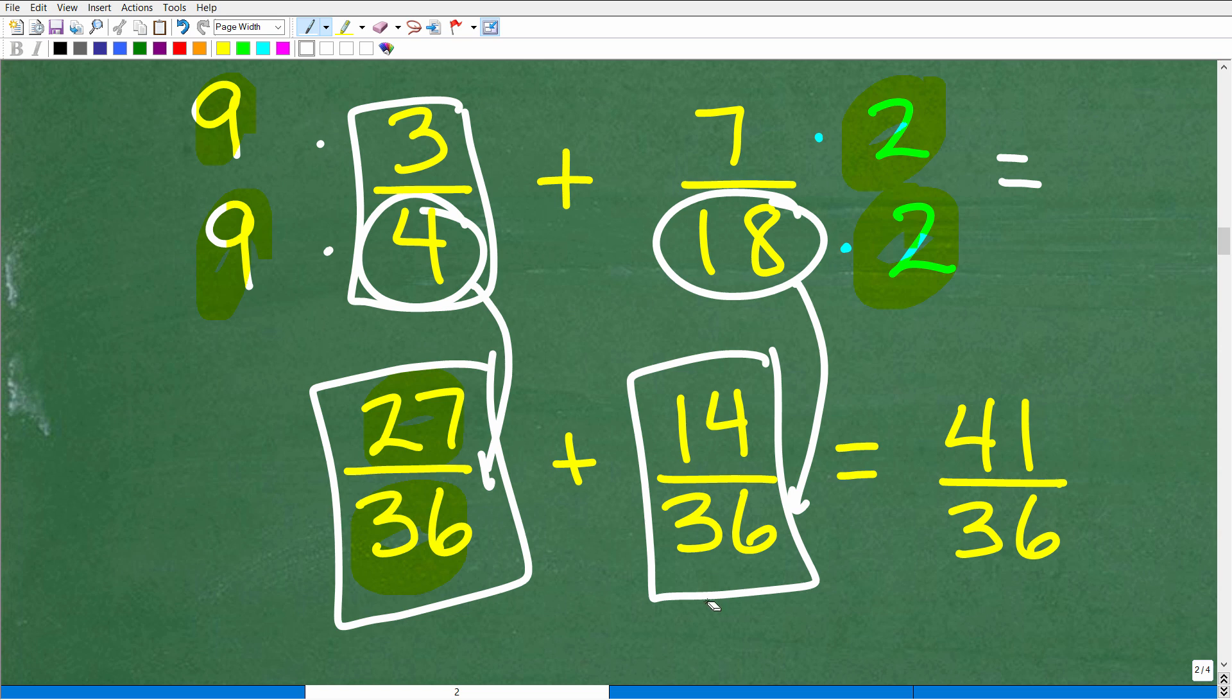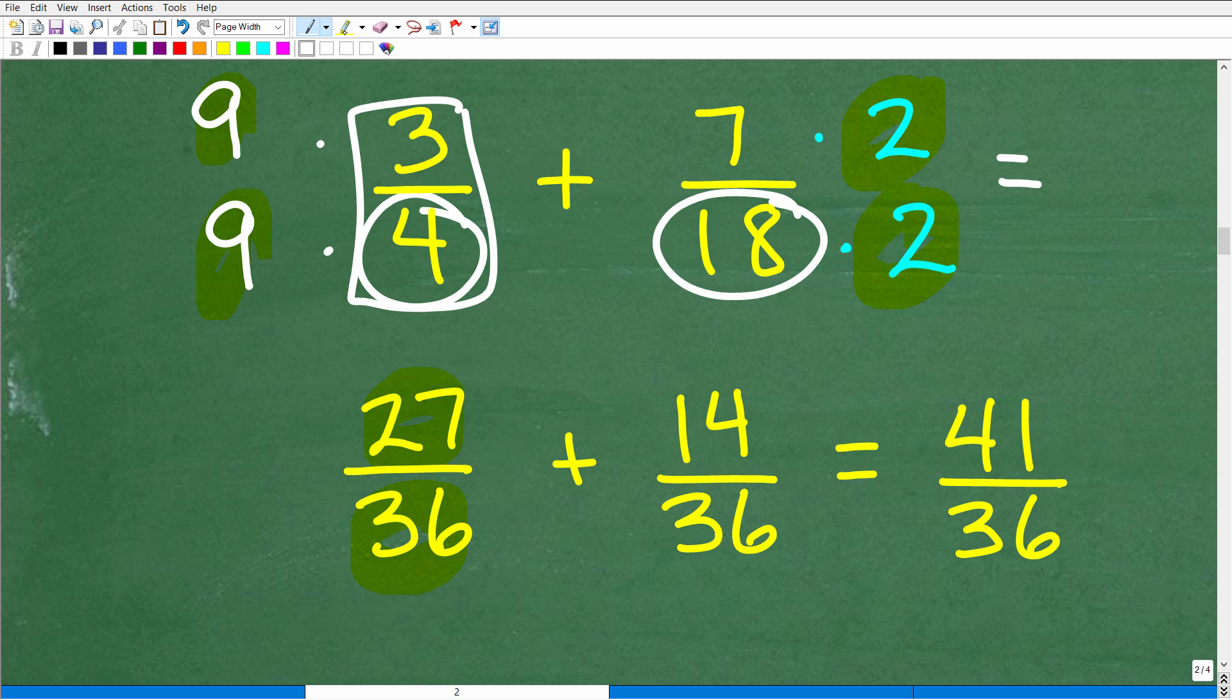So now, once you have the same denominators - and again, right here, we have 36 and 36 - what we could do is simply just add the respective numerators. So 27 plus 14 is 41. So 41/36, that is it. This would be the final answer.